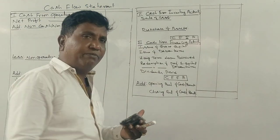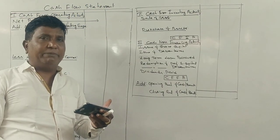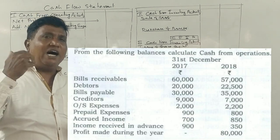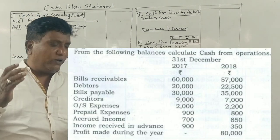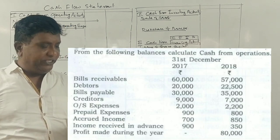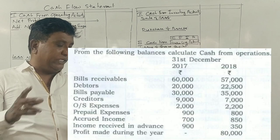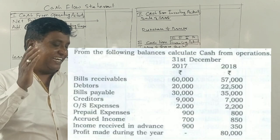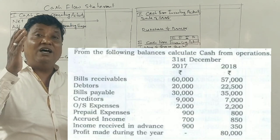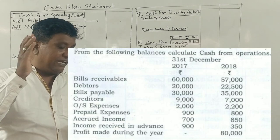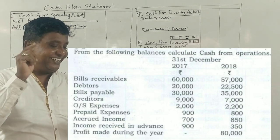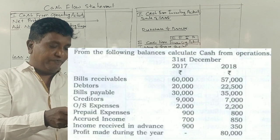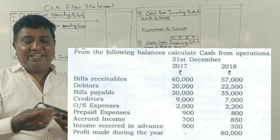Students, this is a cash flow statement problem from the 2019 question paper — link one, 6 marks question. From the following balances, calculate cash from operations for 2017-18. The information includes: bills receivable (current asset), debtors (current asset), bills payable (current liability), outstanding expenses (current liability), prepaid expenses (current asset), accrued income (current asset), and income received in advance (current liability).